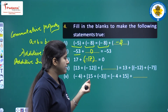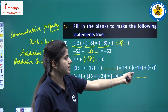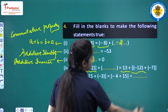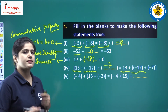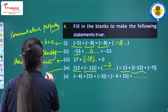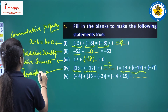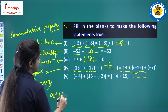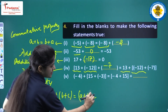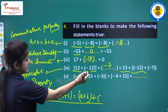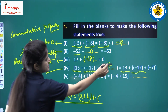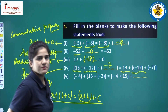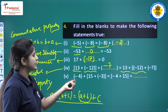Part d: 13 plus minus 12 plus blank equals 13 plus minus 12 plus minus 7. Comparing both sides, 13 and minus 12 appear on both sides, so the missing value is minus 7. This is the associative property, where a plus (b plus c) equals (a plus b) plus c.